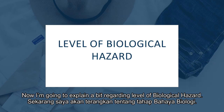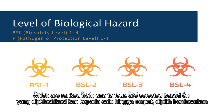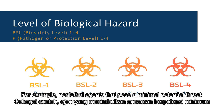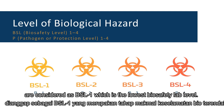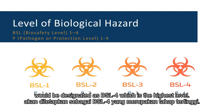Now I am going to explain the levels of biological hazard. A biosafety level, or BSL, also called pathogen protection level, is ranked from 1 to 4 and selected based on the severity of the agents or organisms. For example, non-lethal agents that pose a minimal potential threat are considered BSL-1, the lowest level, while potentially deadly infectious agents like Ebola are designated as BSL-4, the highest level.